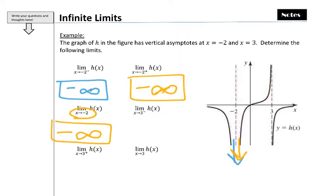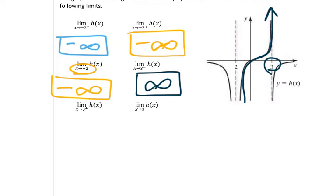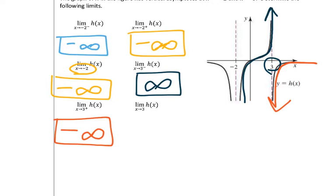Now let's look at the other vertical asymptote. The limit as x approaches 3 from the left: as I come from the left, notice I'm going up as I get closer and closer to the asymptote — so that is positive infinity. The limit as x approaches 3 from the right: as I get closer and closer to that asymptote, notice it's going down, so that's negative infinity. For the overall limit, does the left side equal the right side? On the left it went to positive infinity; on the right it went to negative infinity. Because they do not approach the same values, we say that it does not exist.